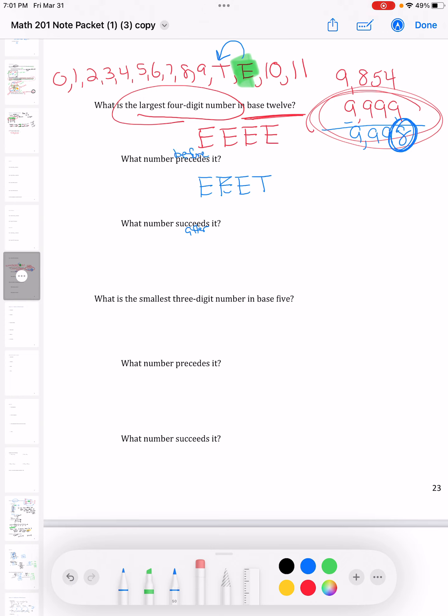So again, let's think about 9,999. What comes after that? Well, what comes after 9,999 is 10,000. And that would be the same case no matter what our base was, because that is the smallest five-digit number. That would be the very first five-digit number we had.